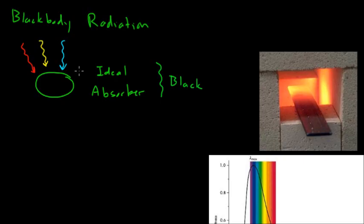So we have our ideal absorber and light is being shone on it. As this light hits the object, the energy from that light is going to be absorbed into the atoms that make up this object and it's going to cause it to heat up.